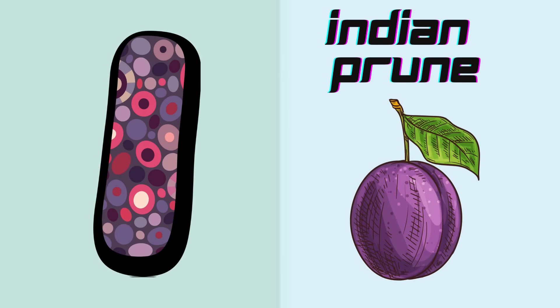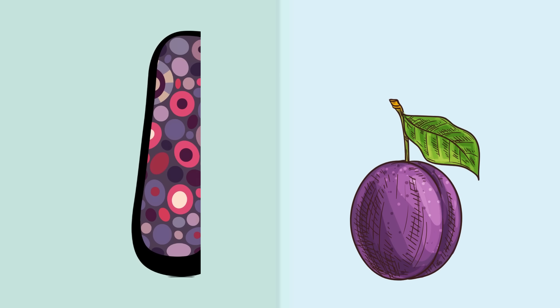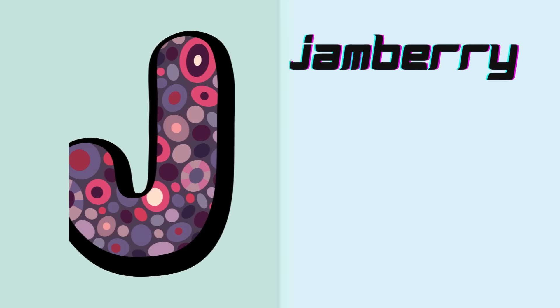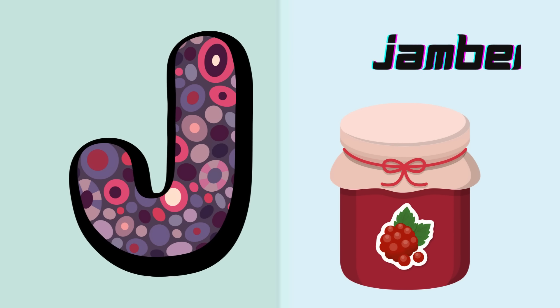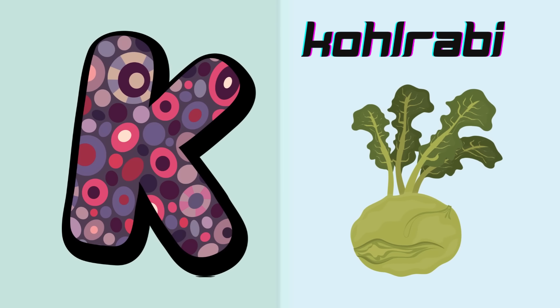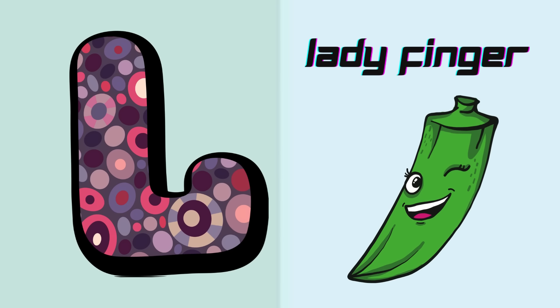I is for Indian prune, i-i-Indian prune. J is for jamberry, j-j-jamberry. K is for kohlrabi, k-k-kohlrabi. L is for lady's finger, l-l-l-lady's finger.